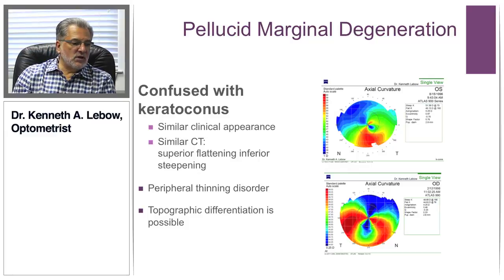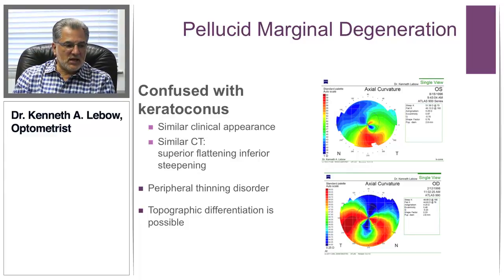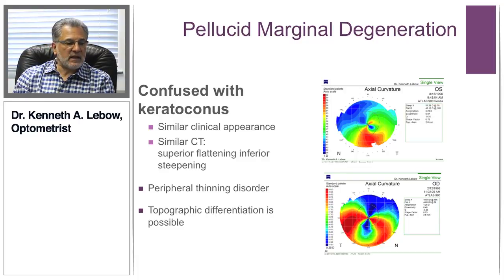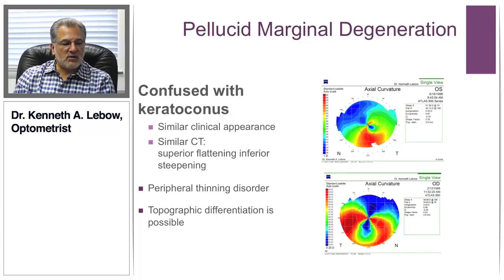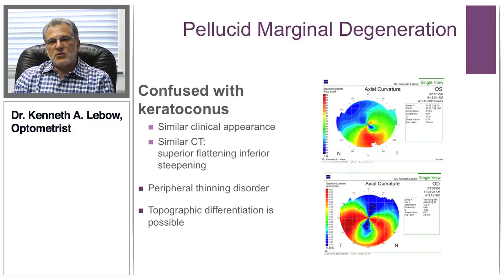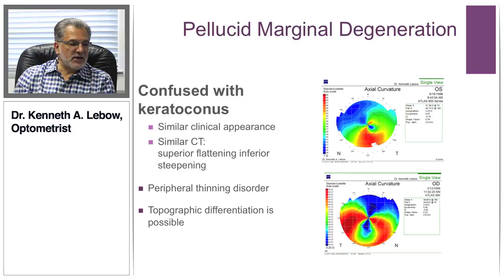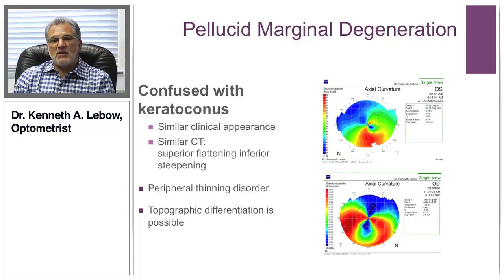Comparing the top image — keratoconus — and the bottom image — pellucid's marginal degeneration — you see both the superior flattening and the inferior steepening in both. But remember, the key difference between them is where the thinning takes place.